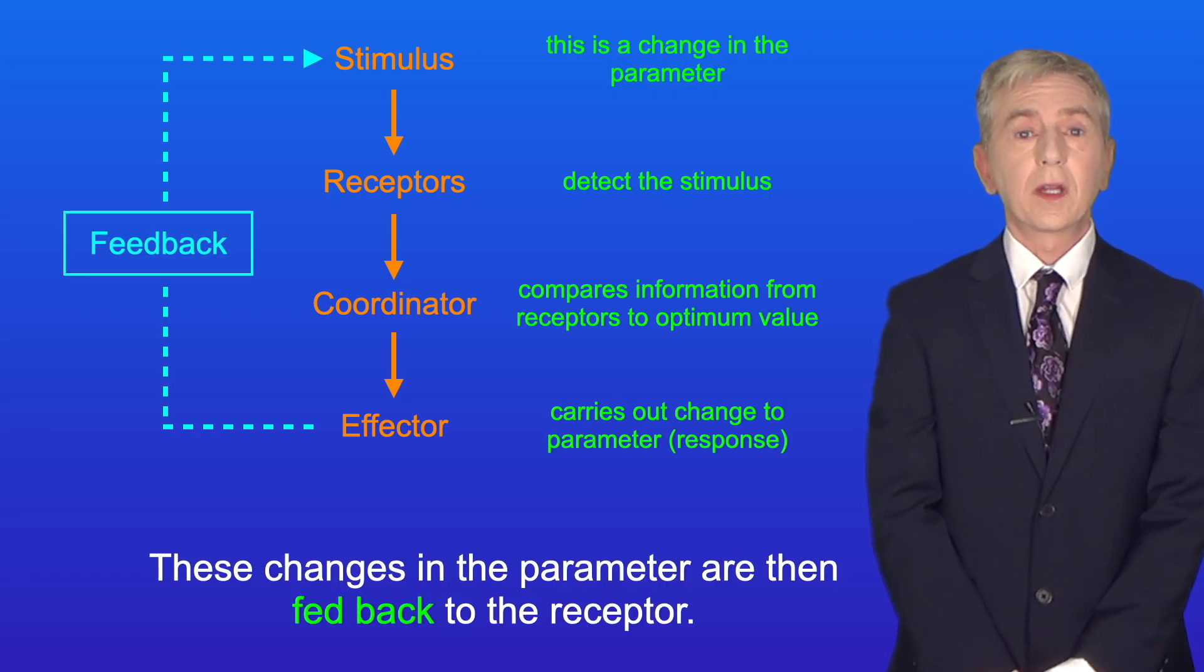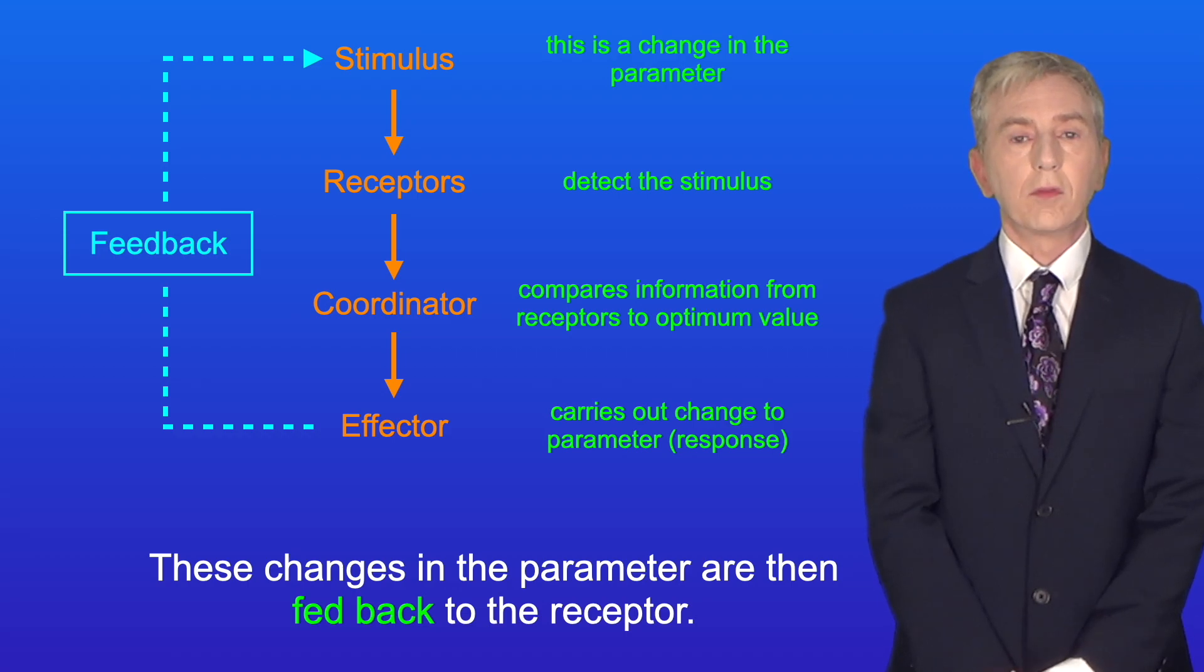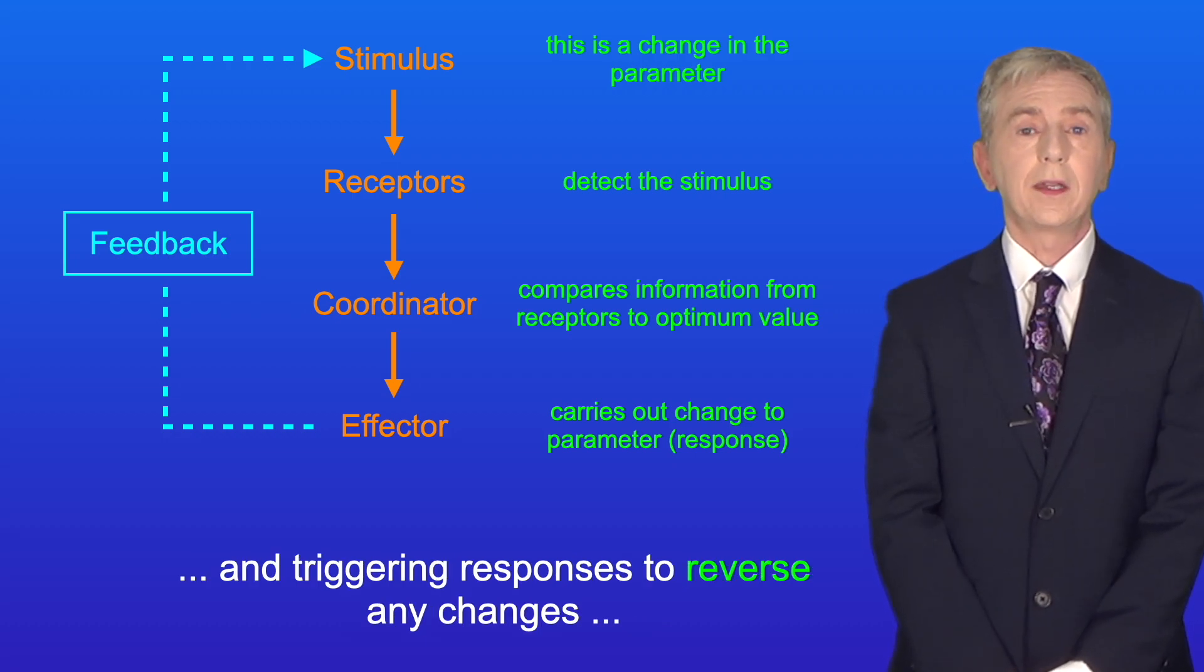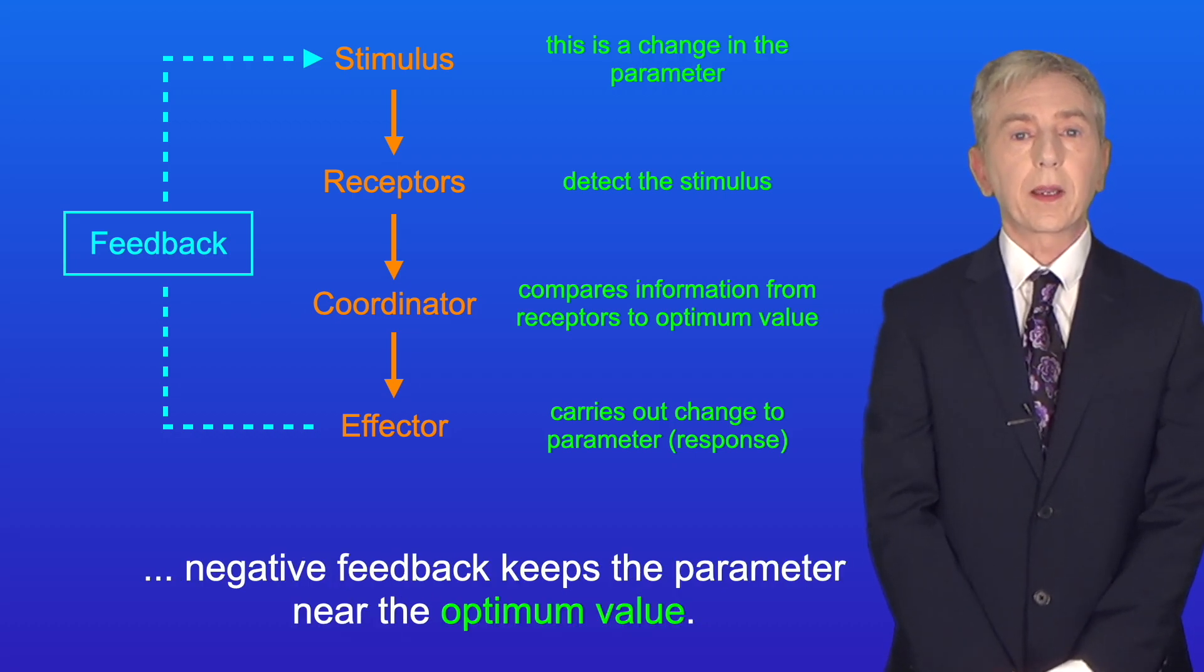These changes in the parameter are then fed back to the receptor. So by constantly monitoring changes to the parameter and triggering responses to reverse any changes, negative feedback keeps the parameter near the optimum value.